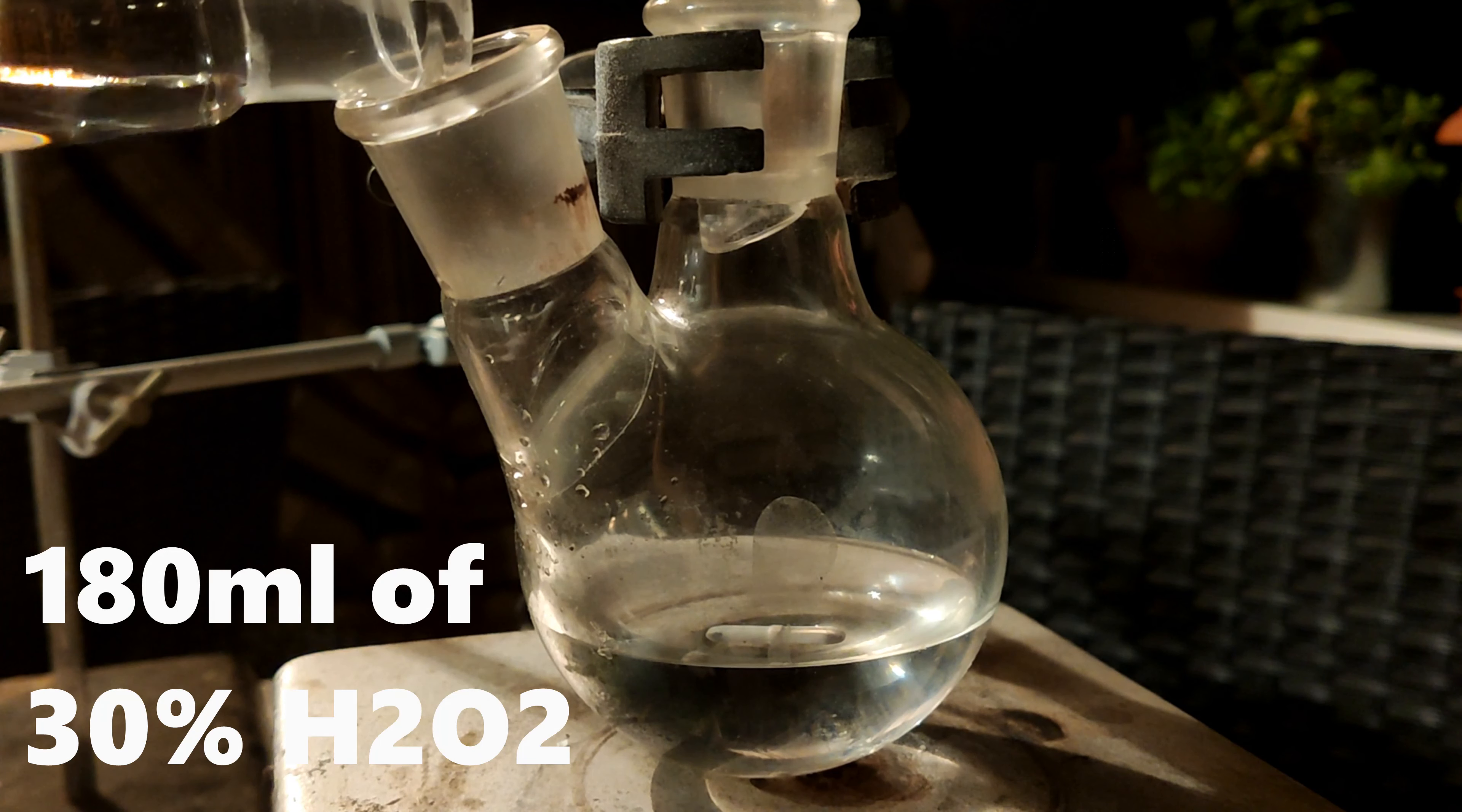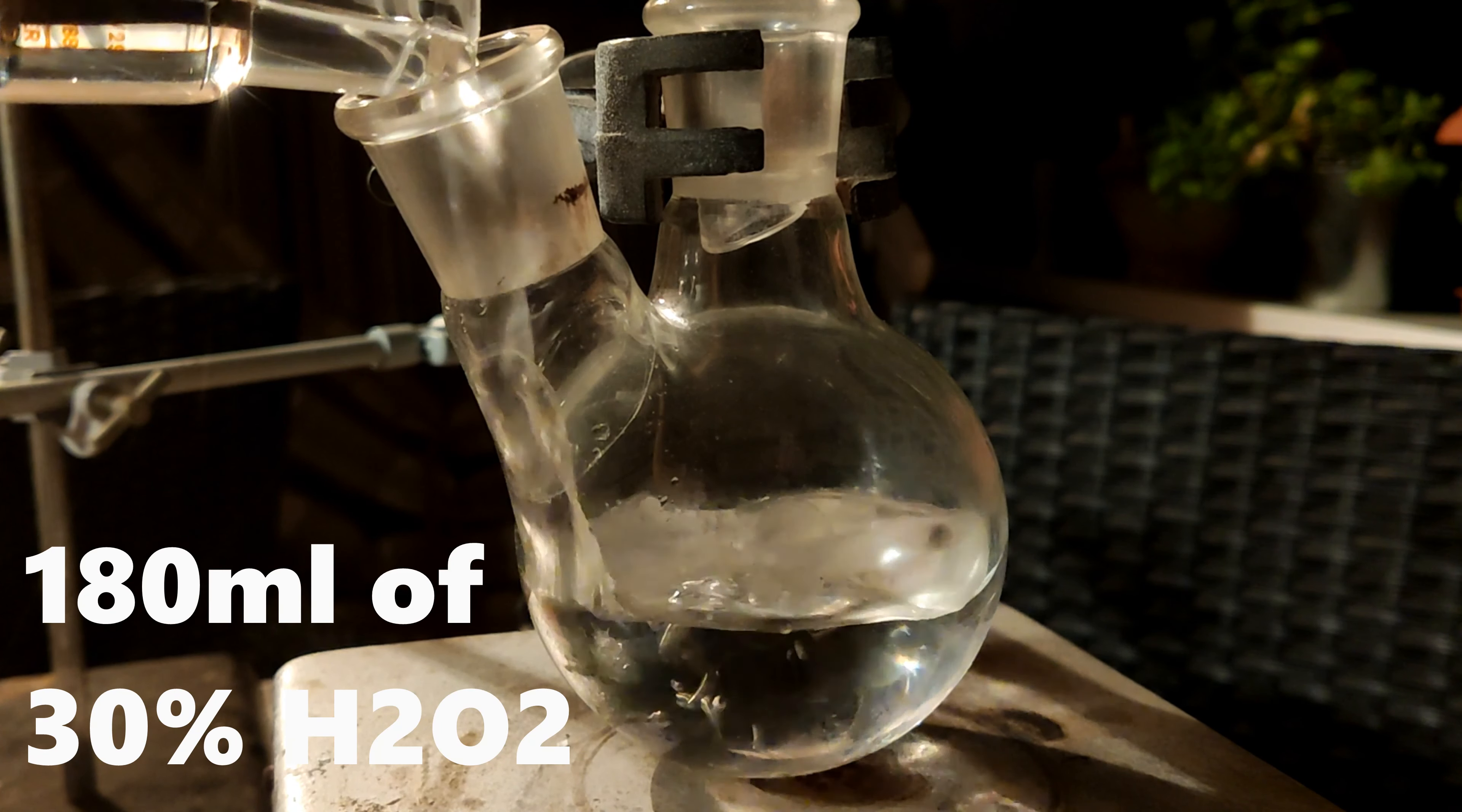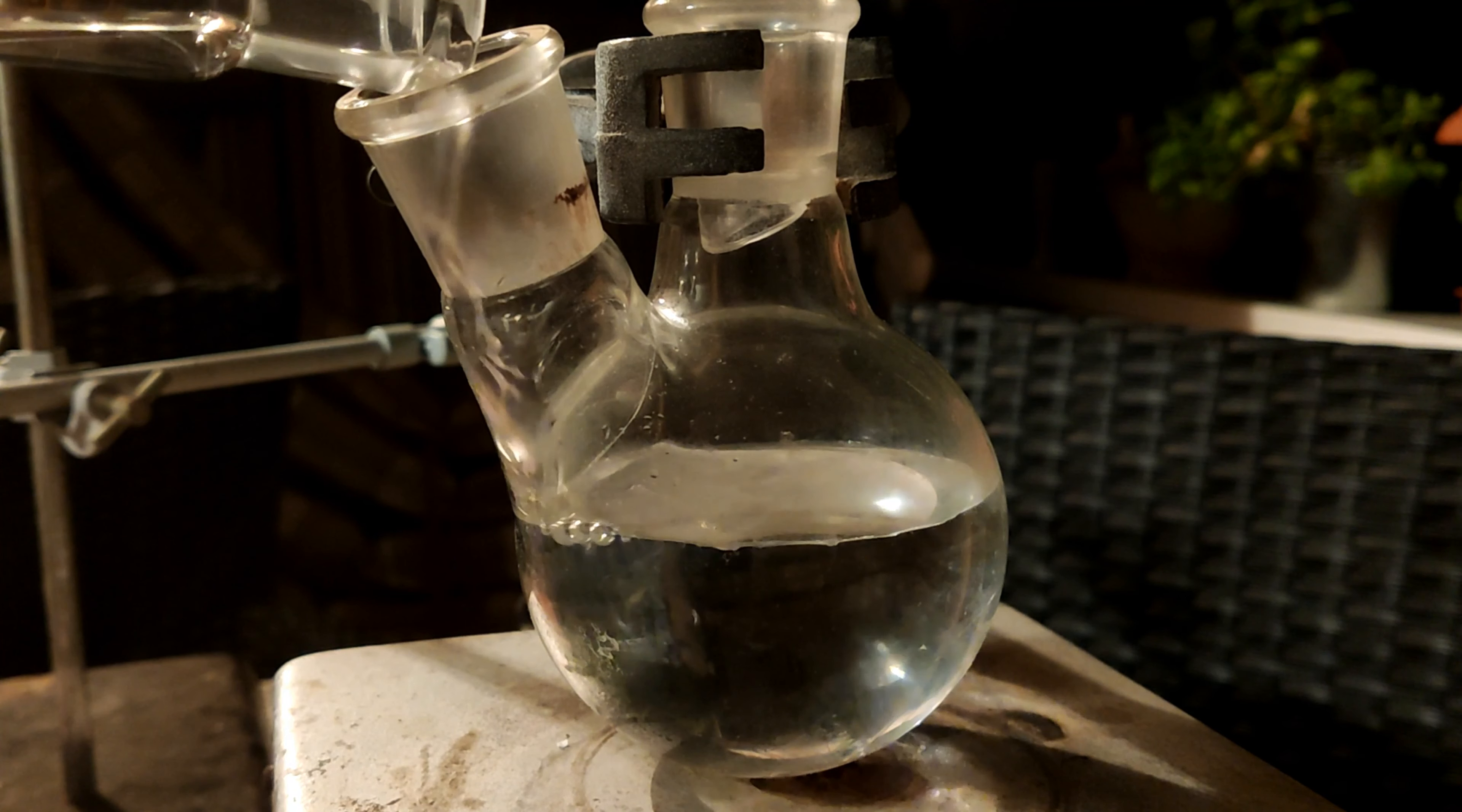We start by adding 180 ml of 30% hydrogen peroxide to our reaction flask.